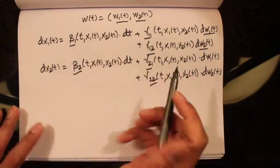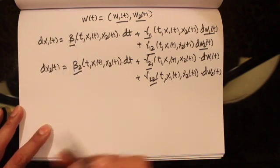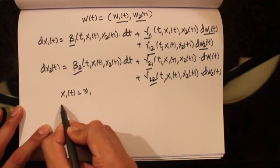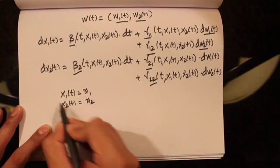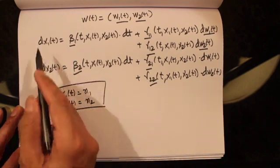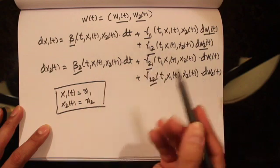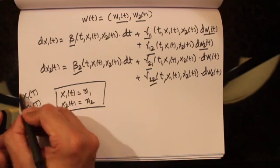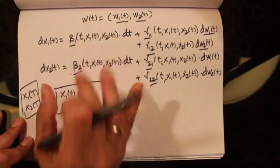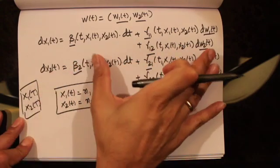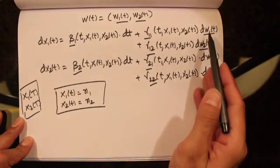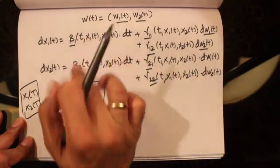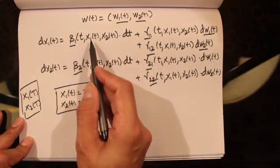This is the differential equation for these two processes. Let's assume that we are given the initial condition that x1 at time t equals x1, and x2 at time t equals x2. With this initial condition we can find a solution to these two differential equations, giving us x1(t) and x2(t). From the right-hand side we can see that these two processes are either driven by Brownian motions or by the processes themselves.